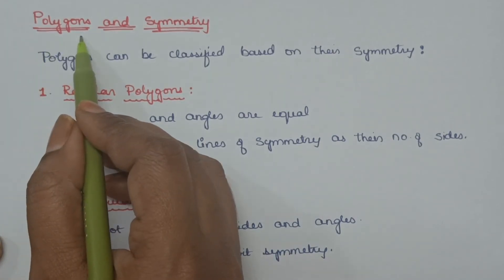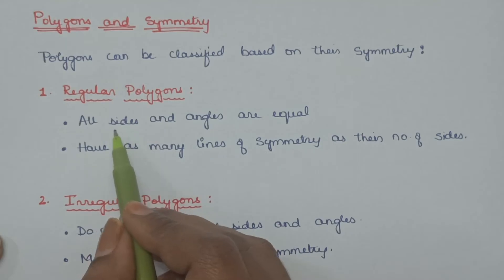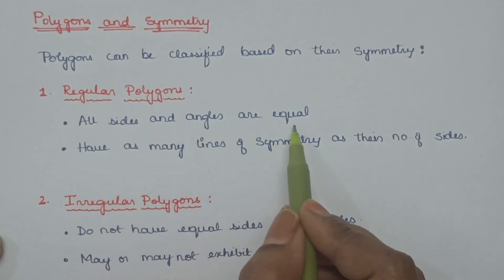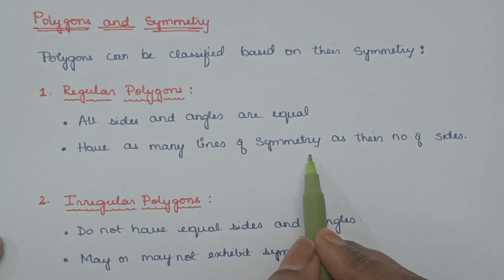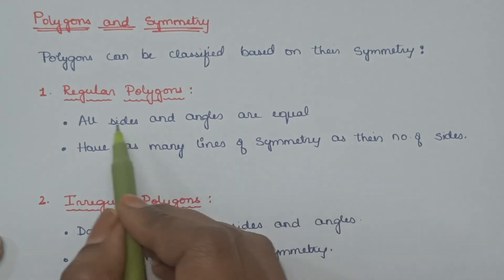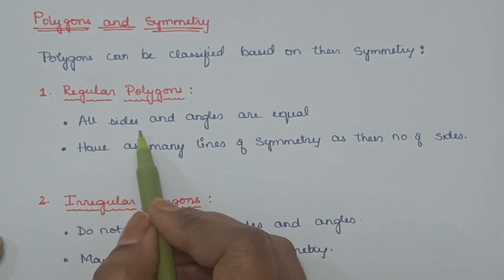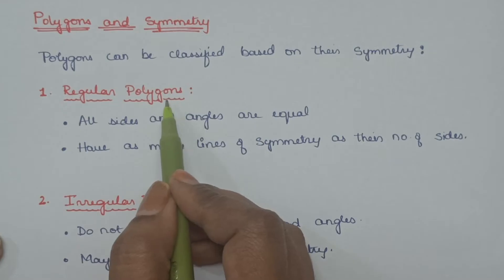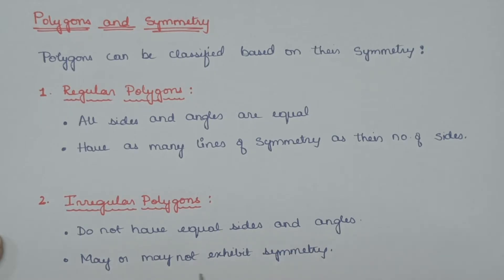Classification of polygons based on symmetry. If a polygon has all sides and angles equal, then the number of lines of symmetry is equal to the number of sides. Such a polygon is called a regular polygon. If the polygon does not have equal sides and angles, it may or may not exhibit symmetry.